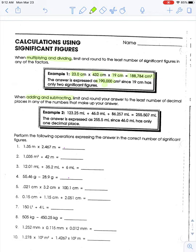When adding and subtracting, you don't worry about significant figures the same way — instead you round to the least number of decimal places. For example: 123.25 plus 46.0 plus 86.257 equals 255.507. The fewest decimal places among those three numbers is to the tenths place, from 46.0. So you round to the nearest tenth: 255.507 rounds down to 255.5. Those are the only digits you should express so your answer is correct and you aren't claiming more precision than your original measurements support.